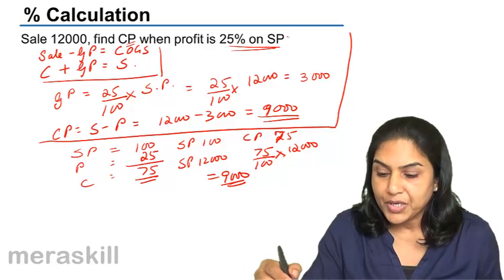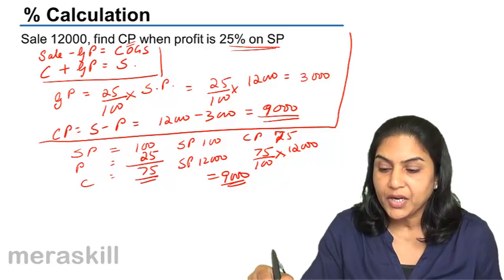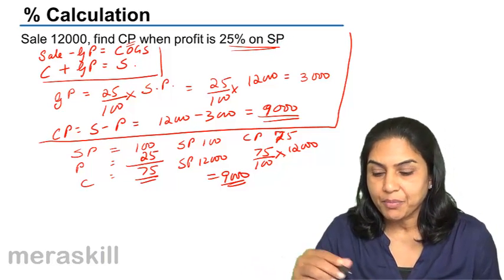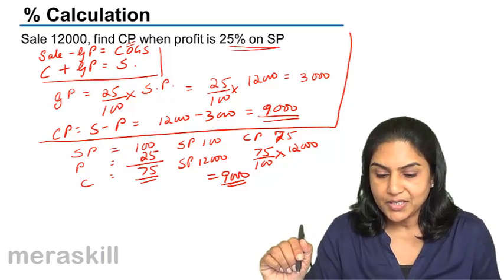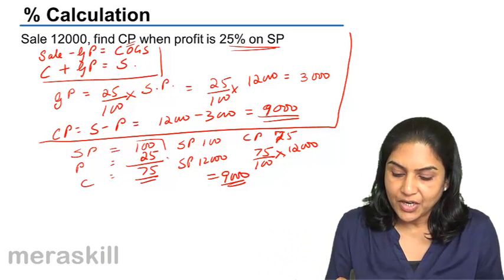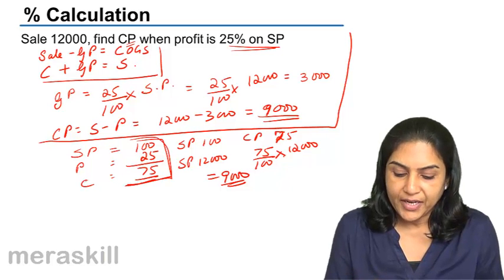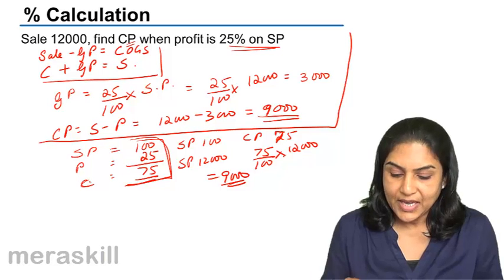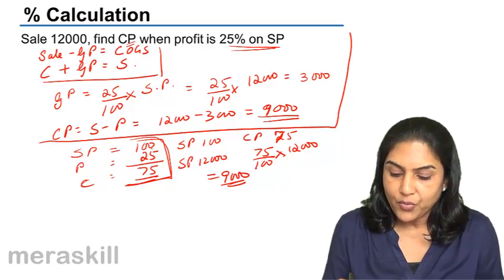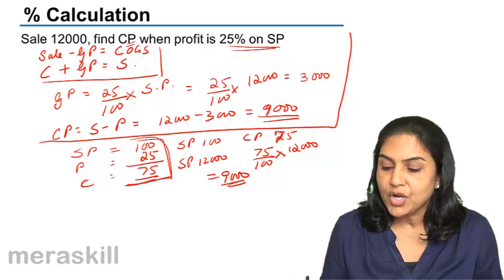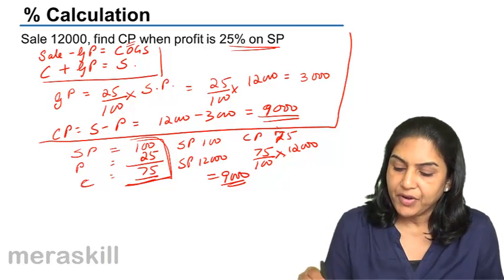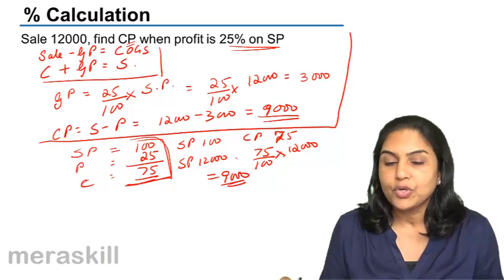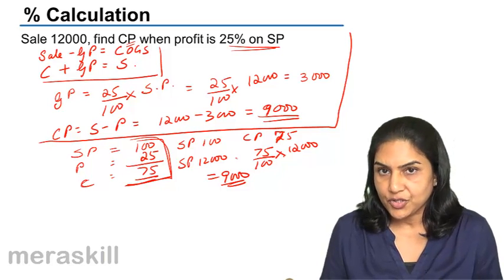In the first method we directly found out profit and deducted it from selling price to arrive at cost price. In the second method, we used the relation — selling price is 100, cost price is 75 — and directly found cost of goods sold as 75/100 into 12,000, giving 9,000.